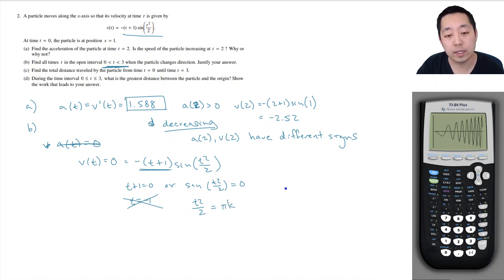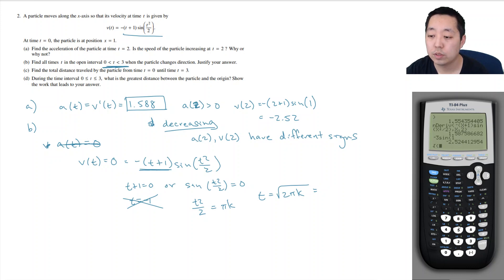This one happens when t squared over 2 is equal to some multiple of pi, because sine is 0 at like 0 and pi and 2 pi and stuff like that. So t would equal the square root of 2 pi k, and so here we need to find all the values where k is an integer, all the multiples of k that are between 0 and 3. So I could do the square root of 2 pi times 1, so that's 2.5. And then times 2 is probably too big. So the only time that happens is that k equals 1, or t is equal to the square root of 2 pi.